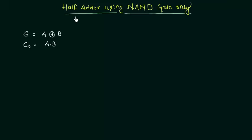In this presentation we will implement a half adder using only the NAND gate. When we discussed the half adder, we found out that the sum S is equal to A XOR B, whereas the carry output is equal to A AND B. Here A is the single-bit number we want to add with B, where B is also a single-bit number.